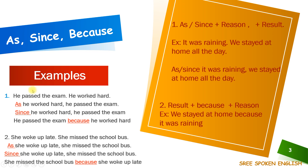Some more examples. He passed the exam. He worked hard. How do we write by using as? As he worked hard, he passed the exam. And with since: since he worked hard, he passed the exam. Both give the same meaning, there is no difference. After the reason, we need to keep a comma. With because: he passed the exam because he worked hard. No comma is needed when because is used in the middle of the sentence.